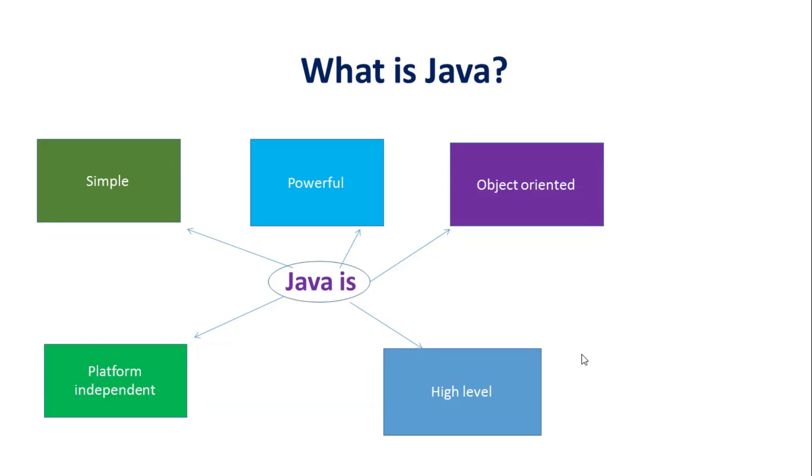What is Java? It is a simple yet powerful object-oriented, platform-independent, and high-level programming language. It is simple because it is very easy to learn and easy to use.